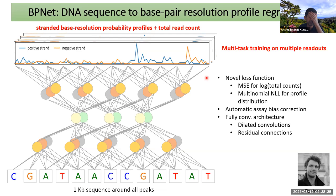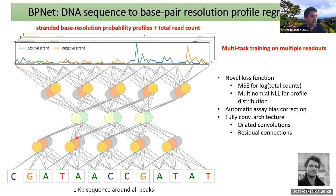This purely convolutional network — no pooling — starts from sequence, learns sequence features like motifs, combines them into higher-order patterns potentially learning syntax and grammar, and transduces these into real-valued readouts. The last layer does a profile deconvolution. Two architectural innovations are used: dilated convolutions, which skip positions when aggregating information, providing an exponential increase in the model's receptive field with fewer layers.